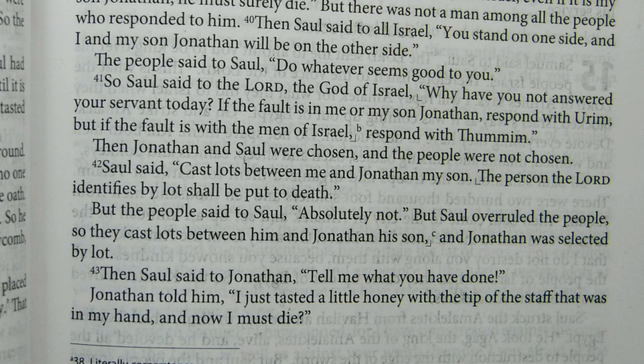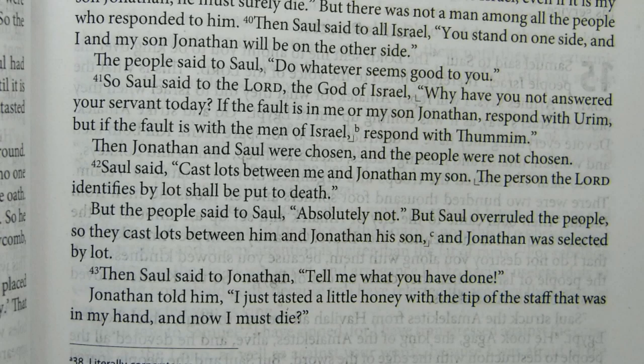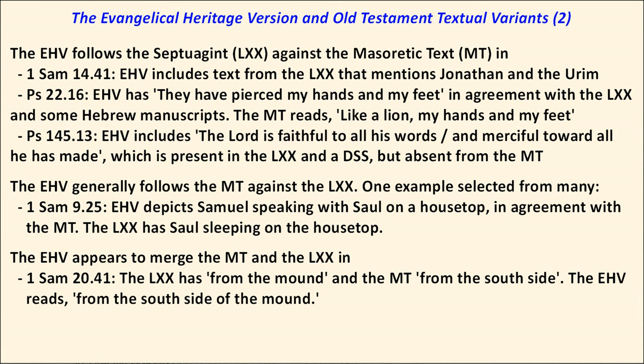Another example of Septuagint use appears in 1 Samuel 14:41, where material in half brackets is inserted, and the footnote explains it's from the Greek Old Testament. A chart shows two more such examples. In general, the EHV tends to follow the Masoretic text against the Septuagint — for example, at 1 Samuel 9:25. Interestingly, at 1 Samuel 20:41, the EHV appears to merge the Masoretic and Septuagint readings together, translating "from the south side of the mound" — taking "mound" from the Septuagint and "south side" from the Masoretic text.